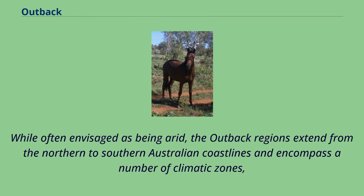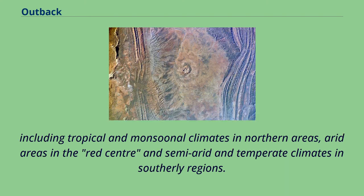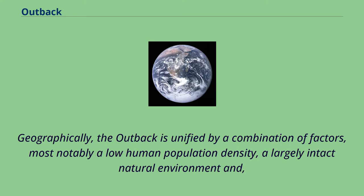While often envisaged as being arid, the outback regions extend from the northern to southern Australian coastlines and encompass a number of climatic zones, including tropical and monsoonal climates in northern areas, arid areas in the red center, and semi-arid and temperate climates in southerly regions.